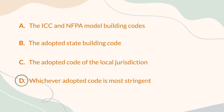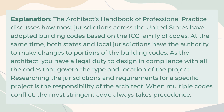The correct answer is D. Whichever adopted code is most stringent. Explanation: The Architect's Handbook of Professional Practice discusses how most jurisdictions across the United States have adopted building codes based on the ICC family of codes. At the same time, both states and local jurisdictions have the authority to make changes to portions of the building codes. As the architect, you have a legal duty to design in compliance with all the codes that govern the type and location of the project. Researching the jurisdictions and requirements for a specific project is the responsibility of the architect. When multiple codes conflict, the most stringent code always takes precedence.